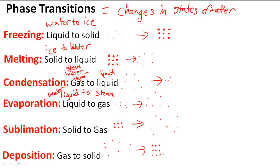Those are the phase transitions and they can go back and forth and have different names from going from one state of matter to another state of matter.